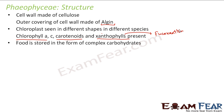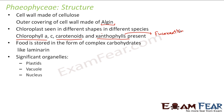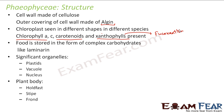Food is stored in the form of complex carbohydrates. As in the case of Chlorophyceae, food was stored in the form of starch and sometimes proteins. Here food is stored in the form of complex carbohydrates like laminarin. Laminarin is an example of a complex carbohydrate. Significant organelles present here are plastids, vacuole, and nucleus.